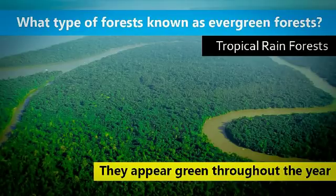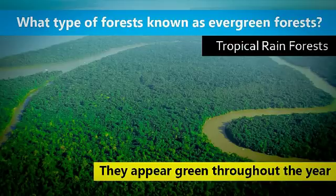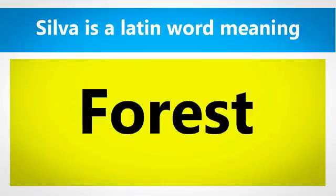Third question: What type of forests are known as evergreen forest? The answer is tropical rainforest. They appear green throughout the year, which is the main reason they are called evergreen forests. Next question: Silva is a Latin word meaning what? The answer is forest. The related term is silviculture, which was discussed in a previous video.